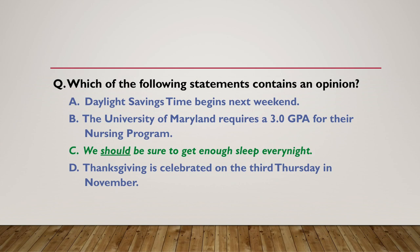Sentence A — daylight savings time begins next weekend — that's a fact, we can verify it. Sentence B — the University of Maryland requires a 3.0 GPA — that is a fact and it can be verified. And D — Thanksgiving is celebrated on the third Thursday in November — that is also a fact, we can verify it. Notice on B and D there are numbers in the sentences: 3.0 GPA and third Thursday. Those are other clues that they are not opinions.